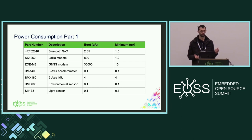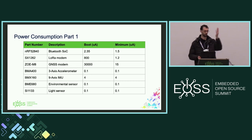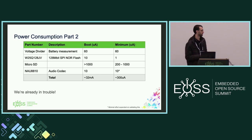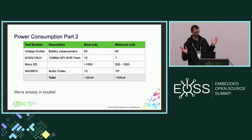For some sensors, the brute and minimum power are the same number because they boot into their lowest power mode. But for others it's very much not the case. GPS modems are notorious for this — you turn them on and they start running at 30 milliamps versus 15 microamps. Looking at the total minimum in this parts list — 300 microamps — and recalling the title 'Journey to Five Microamps,' we're already in trouble. The boot current is also just ridiculous.